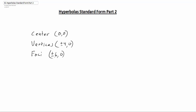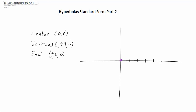If you're given this information and we want to find the standard equation, I would start first by actually plotting what is given, so we can tell what type of graph we're going to have. We know the center is located at the origin, and then we have the vertices, so we're going to go out 4 — to positive 4 and negative 4 — and then the foci go out to 6, 0 and negative 6, 0.